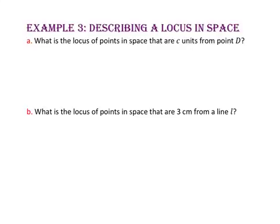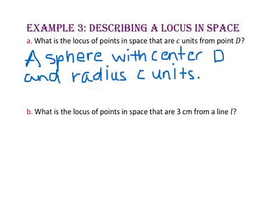In example 3, we will describe a locus in space. For part A, what is the locus of points in space that are C units from point D? In example 1, the locus 1 cm from a given point on a plane was a circle. Since we're working in space now, the new locus will be a sphere with center point D and a radius of C units. For part B, what is the locus of points in space that are 3 cm from line L? In U-try 1, the locus of points 1 cm from line AB gave two parallel lines. In space, we rotate those lines around line L, giving us an endless cylinder with a radius of 3 cm and center line L.